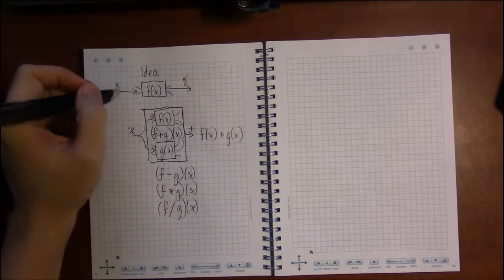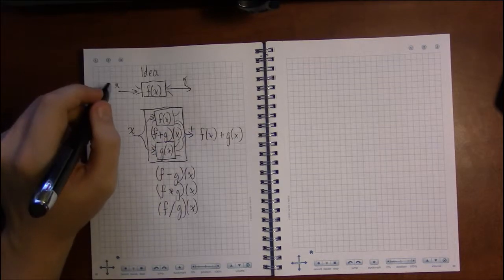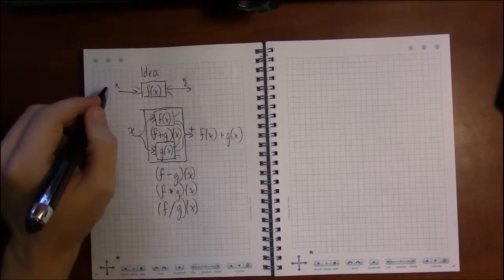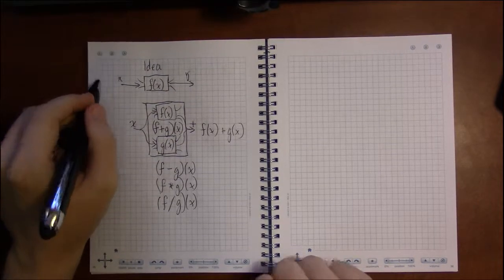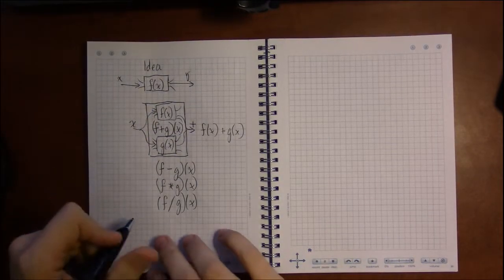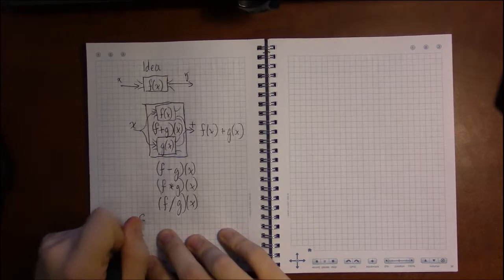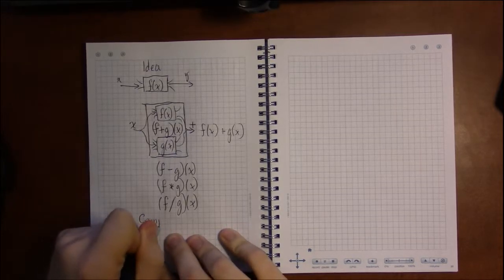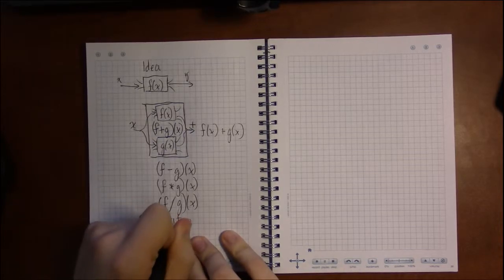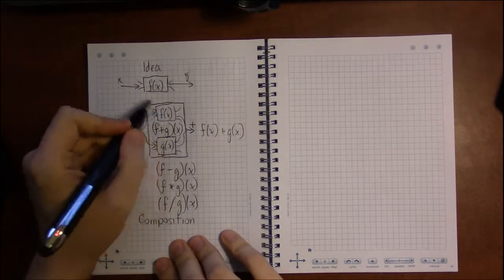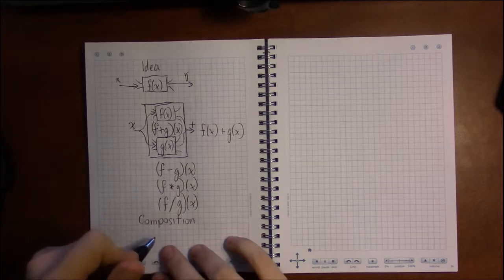But with this idea of a function, there's actually one more operation we can do. And that is to compose two functions together. The composition. And composition is simply stringing two of these machines together.